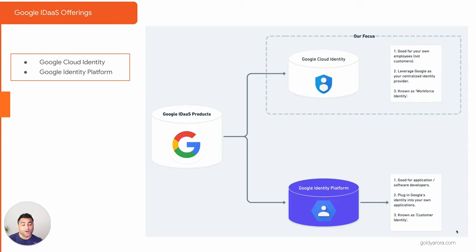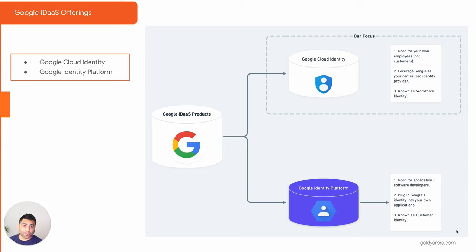The second product is called Google Cloud Identity, which is the focus of this course. Here you leverage Google Cloud Identity as your centralized identity provider, primarily for your workforce. For example, if your users need to log into 10 different applications every day, you can have Google Cloud Identity as the centralized identity provider, connect it with those 10 applications for user lifecycle management and authentication, so that once users log in, their dashboard shows all 10 applications.